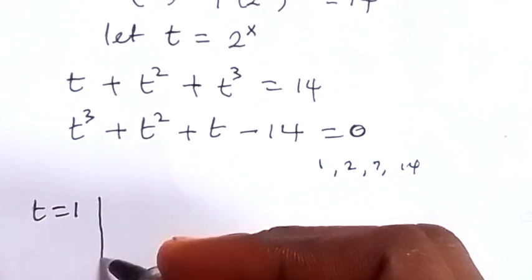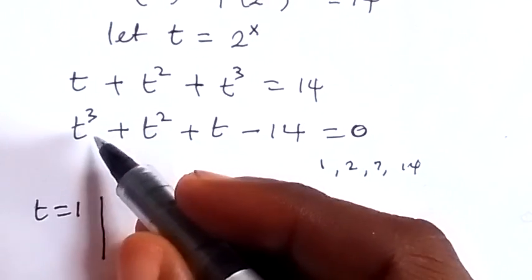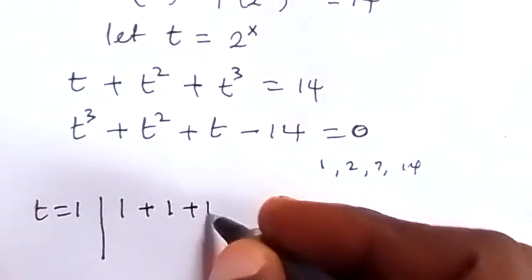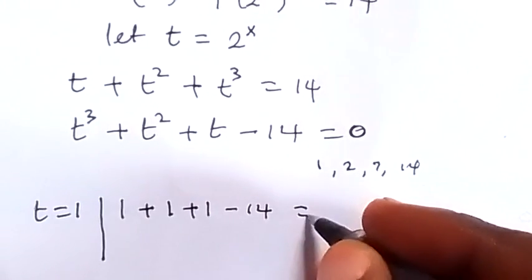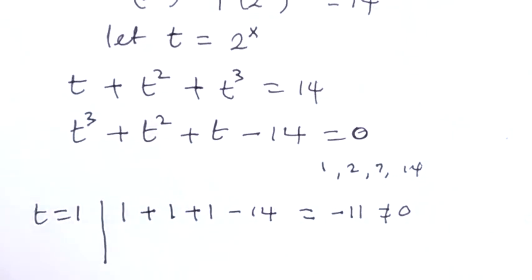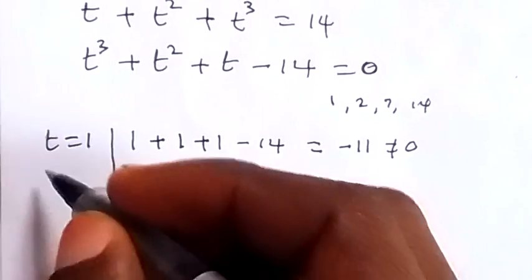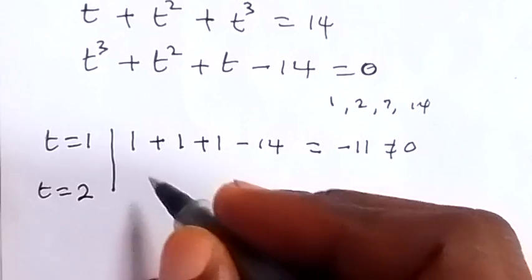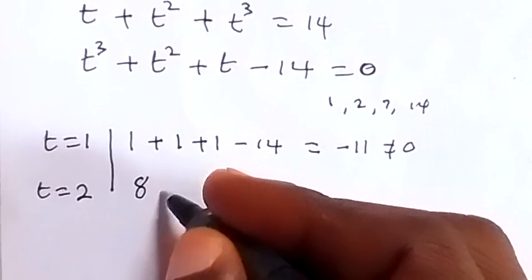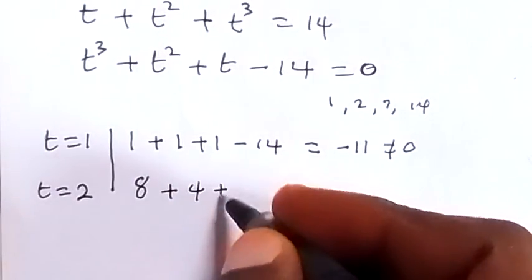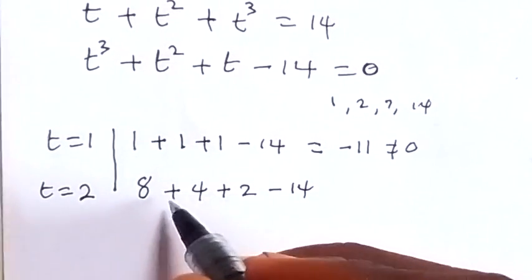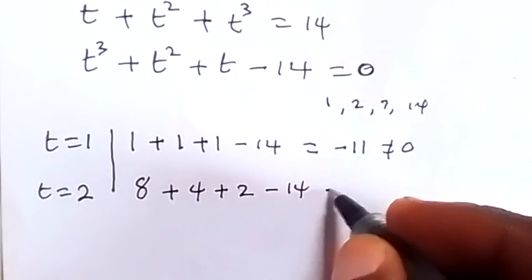When we substitute t equals 1: 1 raised to power 3 is 1, plus 1 squared is 1, plus 1 minus 14 — this equals minus 11, which is not equal to 0. So 1 is not a root. Now substituting t equals 2: 2 raised to power 3 is 8, plus 2 raised to power 2 is 4, plus 2, minus 14 — that's 8 plus 4 plus 2 equals 14, minus 14 equals 0.